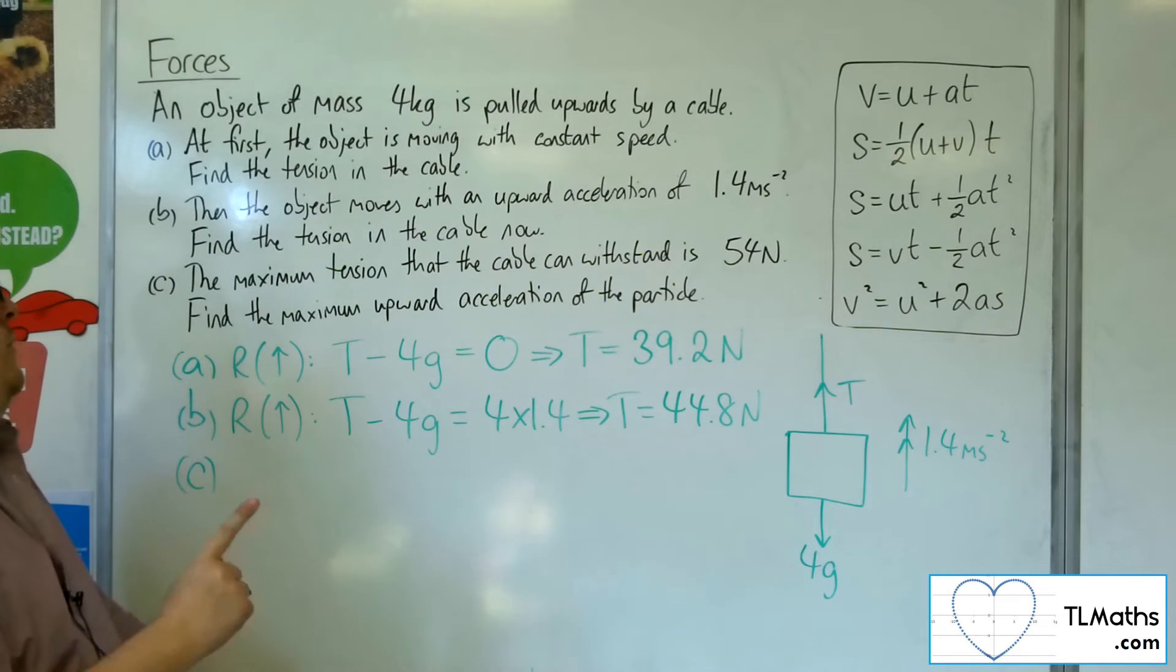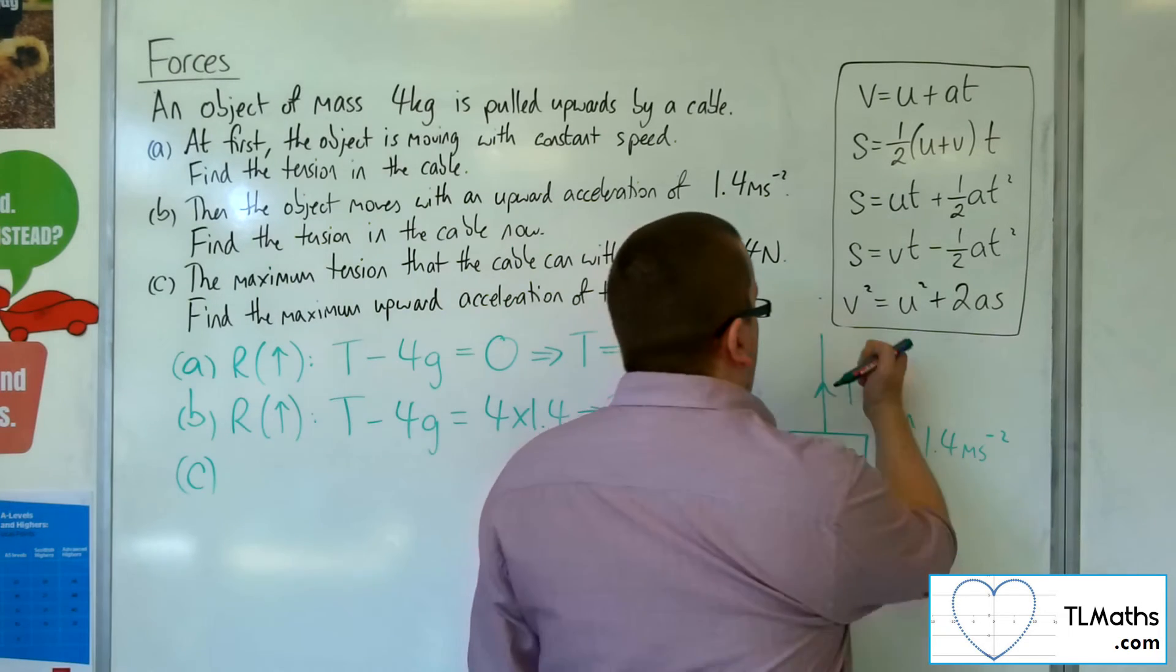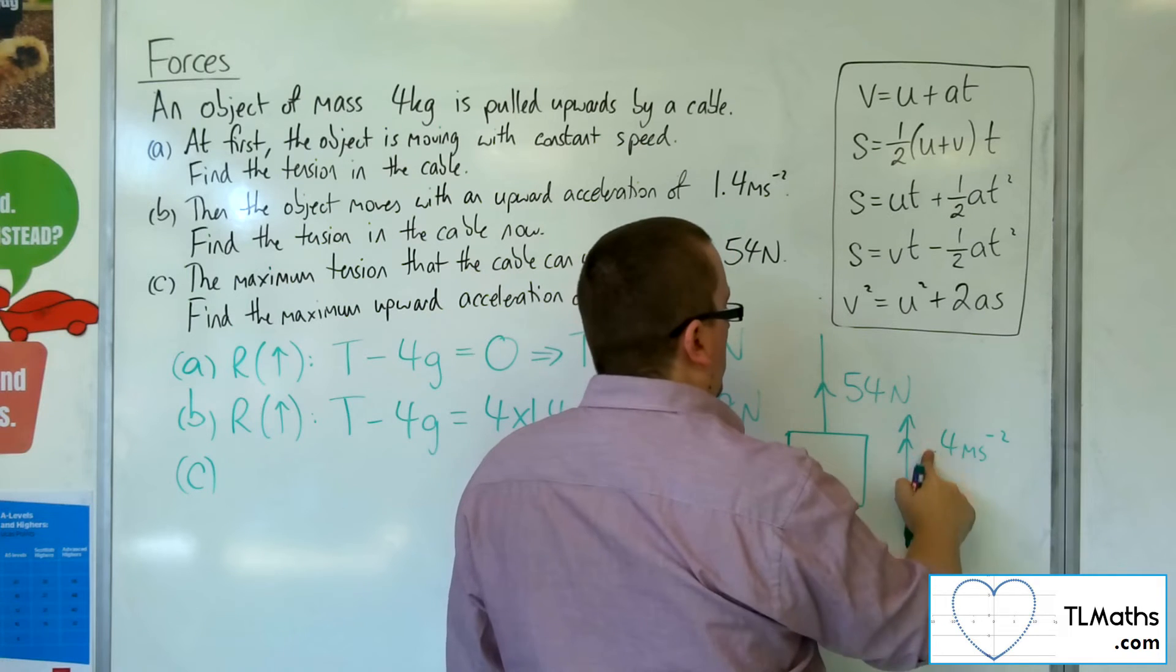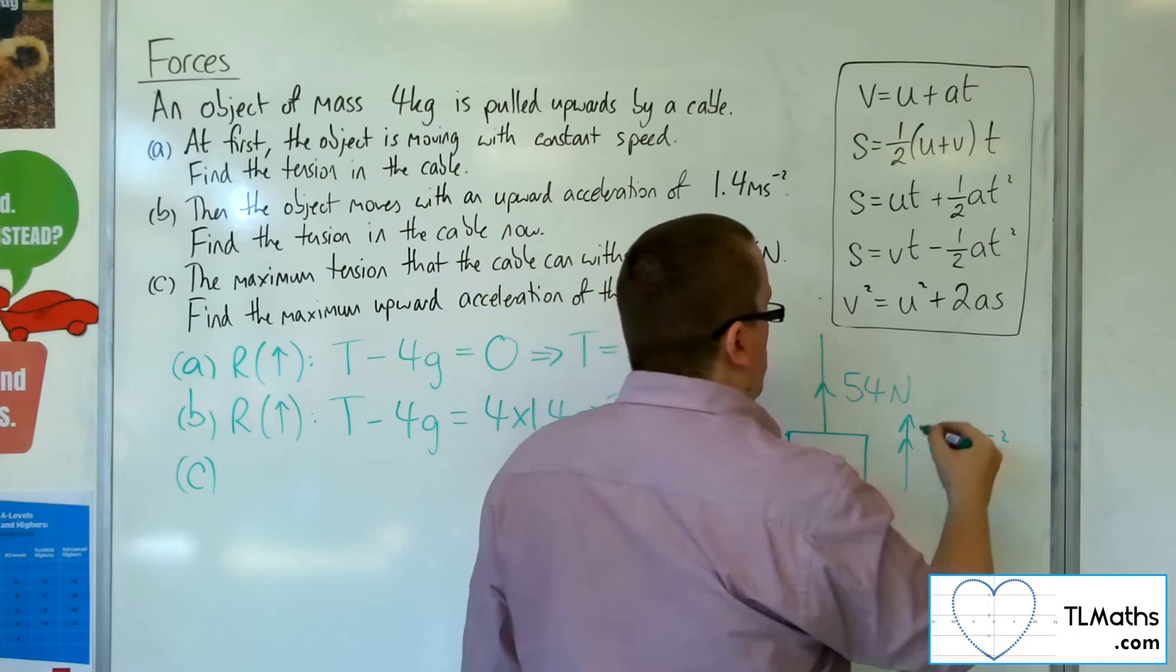Now, for C, we're told that the maximum tension that the cable can withstand is 54 newtons. Find the maximum upward acceleration of the particle. OK. So if that is 54 newtons, I want to now find the acceleration.